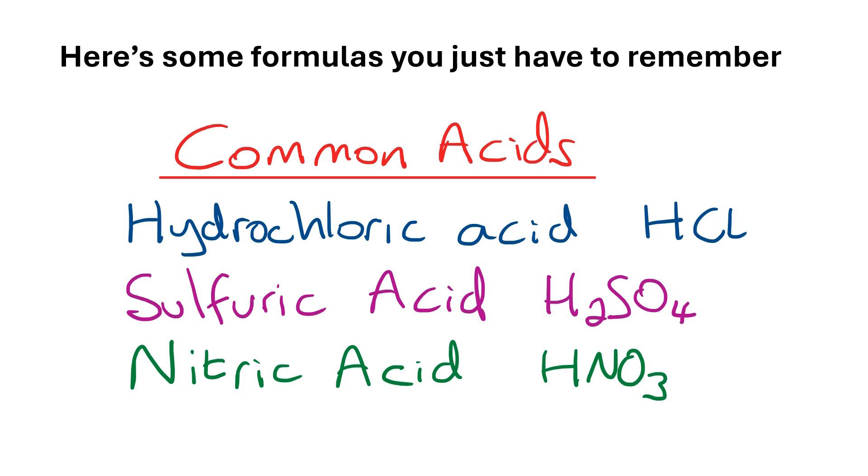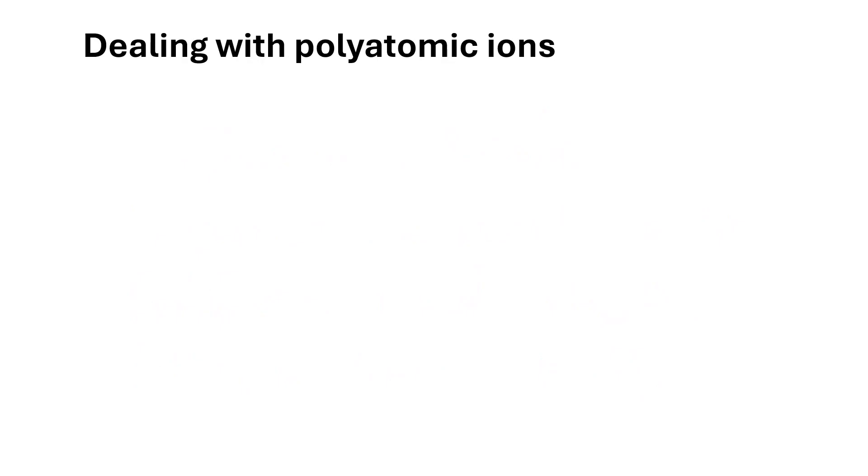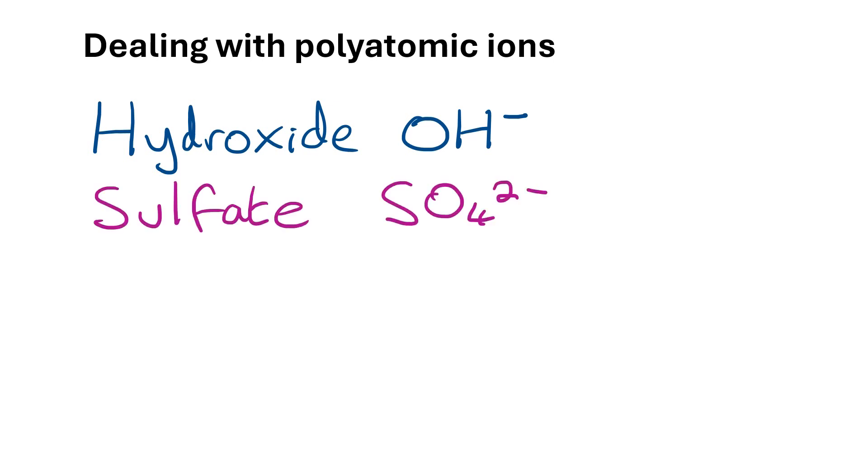Now if you've stuck with me so far you're doing really well on this video. Now we're going to make it even more challenging by looking at polyatomic ions. These are where we've got more than one atom forming an ion. With the case of hydroxide we can see an oxygen atom and a hydrogen atom all together makes a 1-. Sulfate is one sulfur, four oxygens and that whole thing is a 2-. And finally nitrate is NO3, 1-.